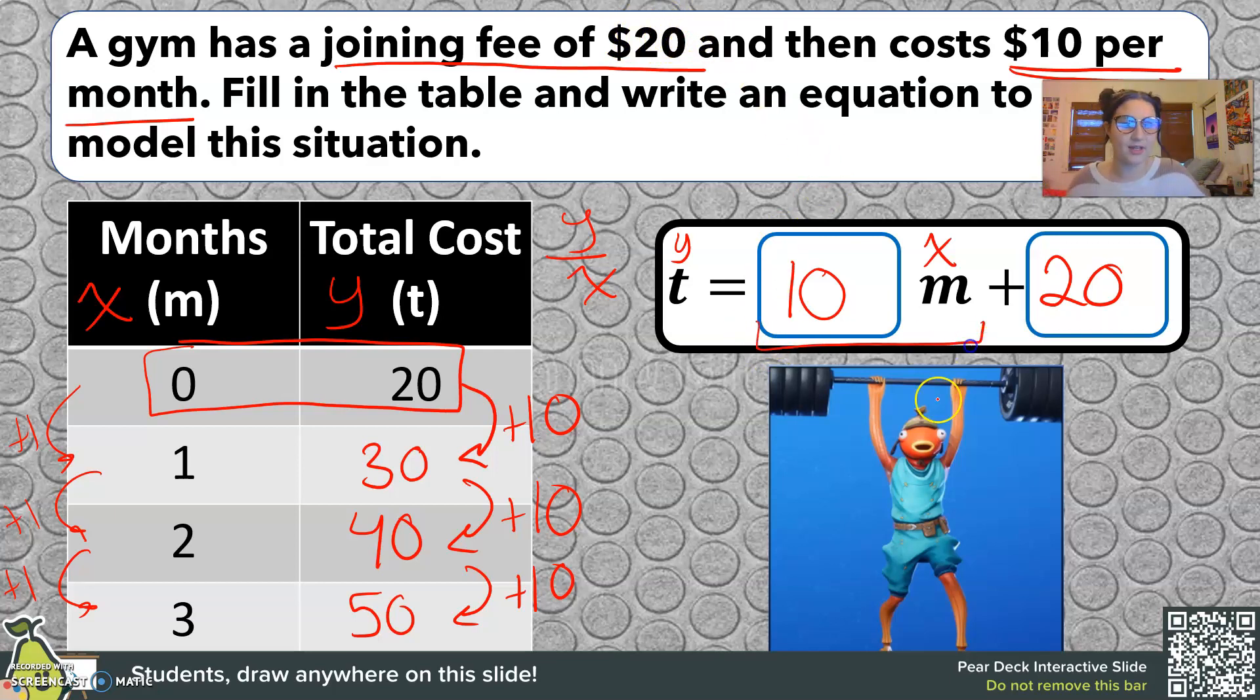This is the value that changes, right? So this joining fee is like that initial. What are we spending first? And it's not multiplied by anything. We can take this information from the word problem and put it into an equation. So t equals 10 times the number of months plus 20.